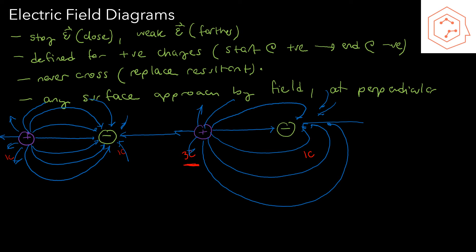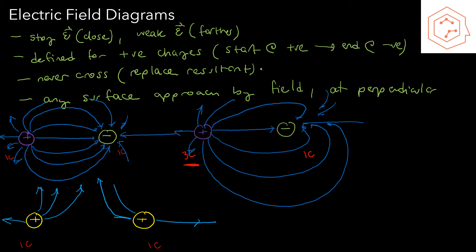Our final case is two like charges — a positive and a positive charge, both one coulomb. They're going to repel each other, so the field lines are going to be outwards. In the interior we get something like a resultant of all the forces. You can see that in the middle there is no electrical field, because a positive test charge there would have a force pulling it one way and also the other way, and these simply cancel out.